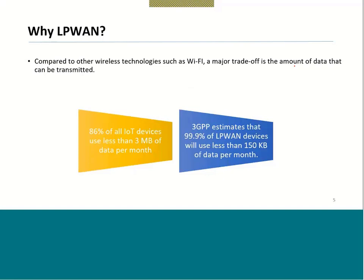Research shows that 86 percent of all IoT devices use less than 3 MB of data per month. And 3GPP — a standards group, whose full form I encourage you to look up — estimates that 99.9 percent of LPWAN devices will use less than 150 kilobytes of data per month.